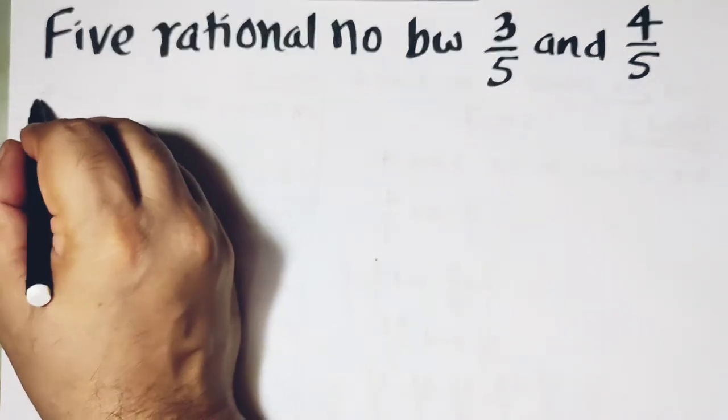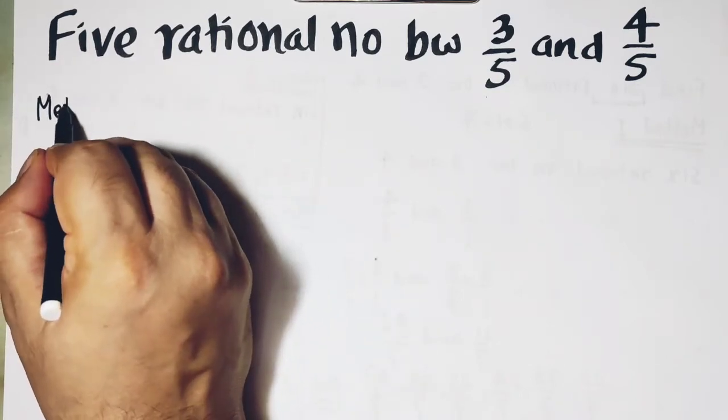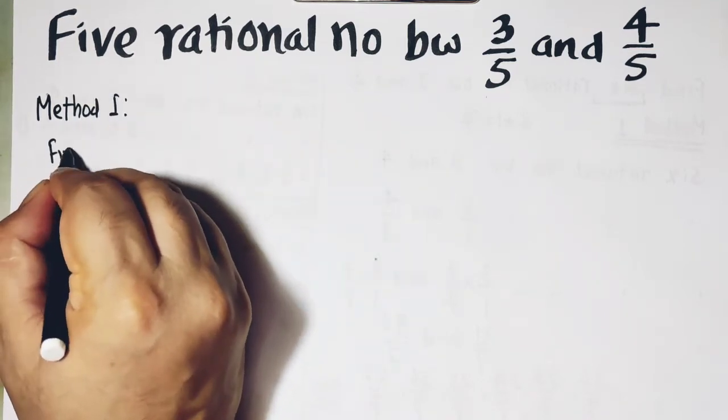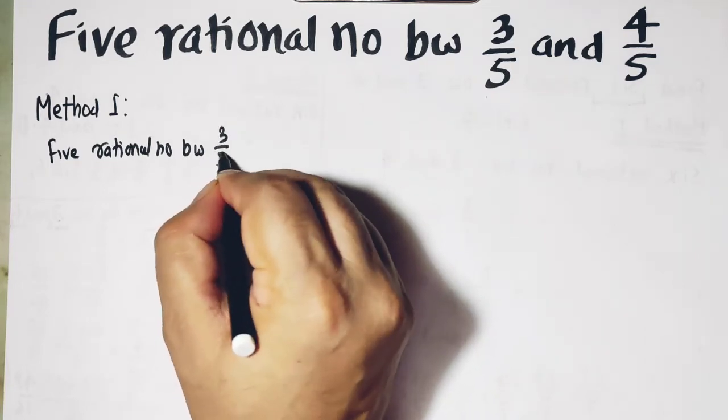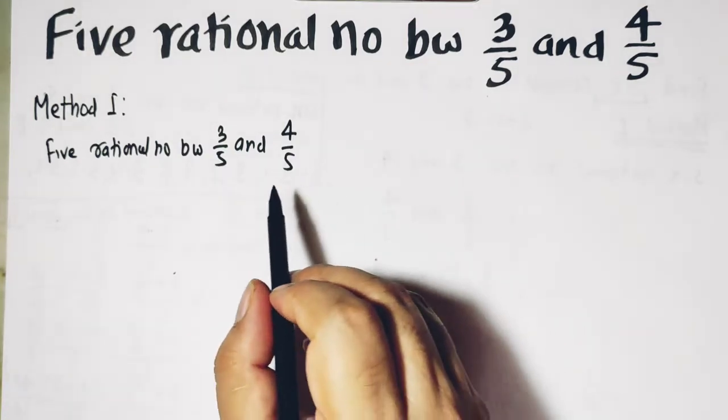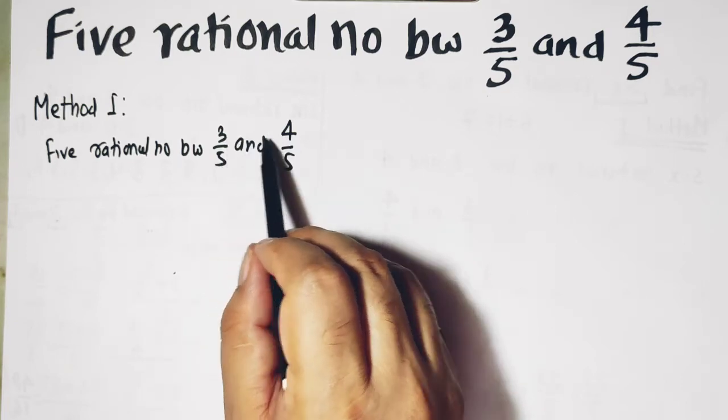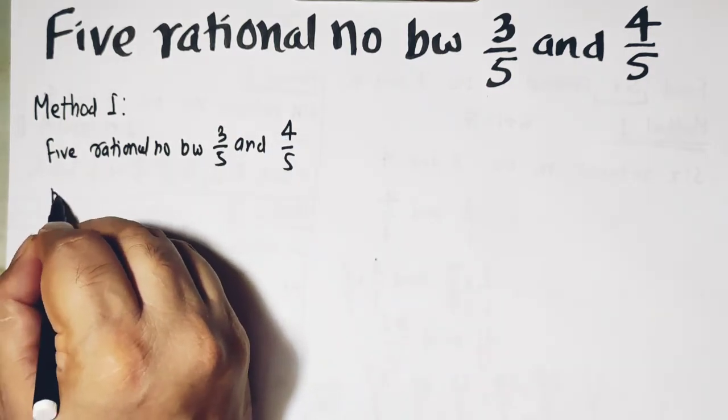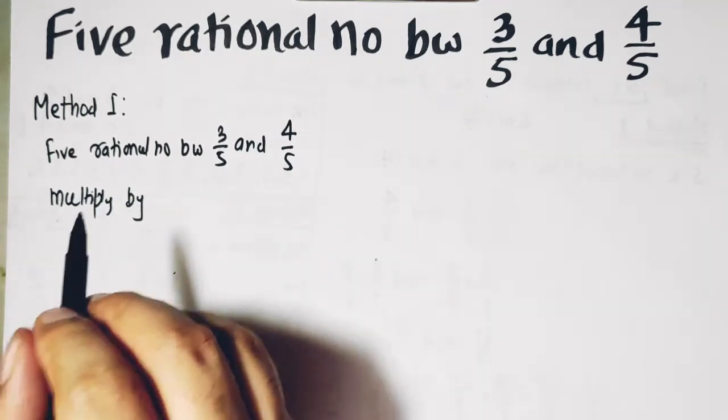So it might be possible that the answer I get here is different from your answer. I'm going to solve this question using different methods and you will see that I'll get different answers using different methods, but all are correct. So it might be possible that in the back of your book the answer is different and my answer is different, but both are correct.